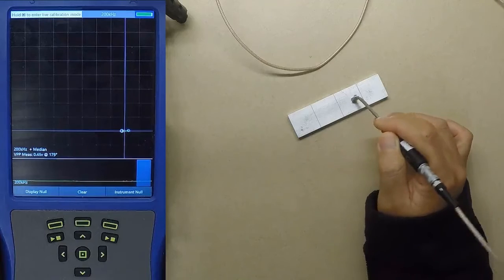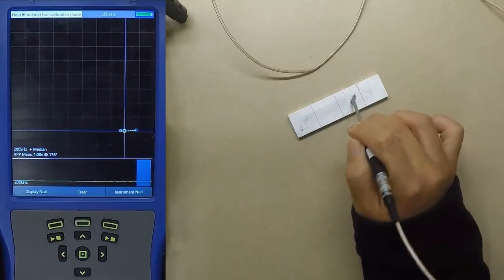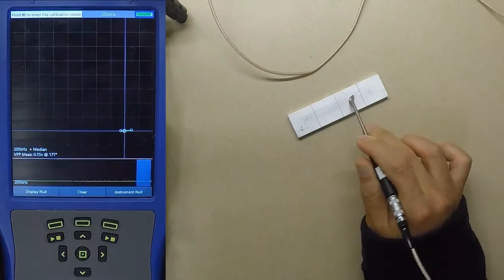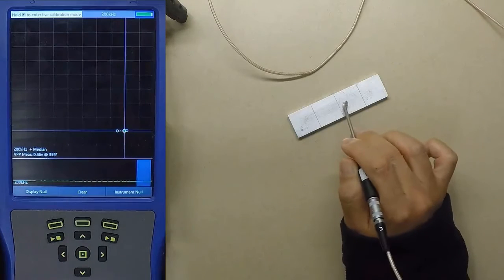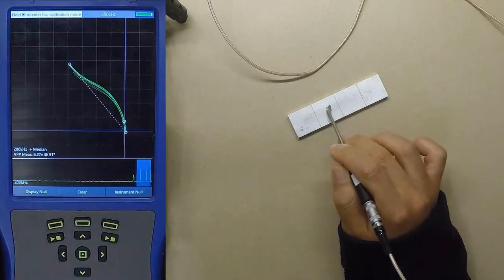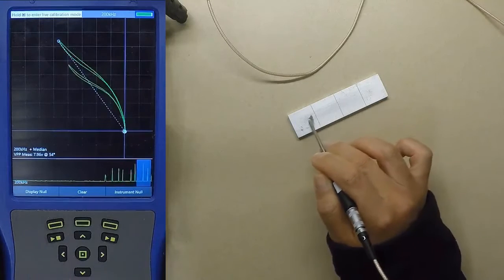Now you can see even when I rock the probe back and forth, the operating point is pretty steady on the screen. All the signals originate from the same point and there is no drifting of the signal.